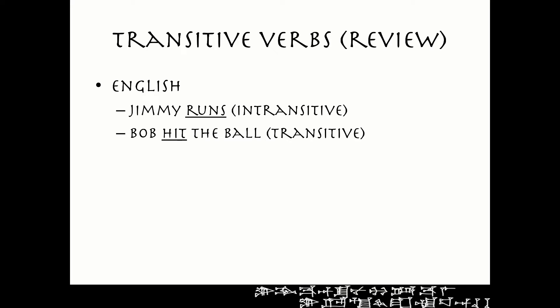So a brief review of transitive verbs. In English, when we say a sentence like 'Jimmy runs,' where Jimmy is the subject but he's not doing an action to something else, we call that an intransitive verb. So Jimmy runs, Sally walks, Nancy swims — these are all intransitive verbs because they don't take a direct object. The subject isn't doing something to something else. However, in the sentence 'Bob hit the ball,' the ball is the direct object of the verb 'hit.' So the subject, Bob, is doing something to another thing, the direct object — we call that a transitive verb. 'Jimmy threw the baseball,' 'Frank ate his food' — these are all transitive verbs where the subject is acting upon a direct object.